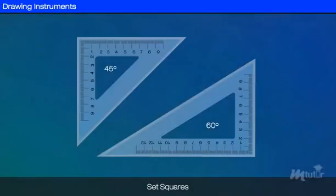Set-squares are generally made from plastic or celluloid material. They are triangular in shape with one right-angled corner. A pair of set-squares includes 30°-60° and 45° triangles. The 45° set-square is generally provided with a protractor to facilitate marking of angles.